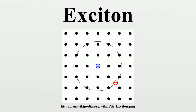Consequently, the exciton has slightly less energy than the unbound electron and hole. The wave function of the bound state is said to be hydrogenic, an exotic atom state akin to that of a hydrogen atom. However, the binding energy is much smaller and the particle size much larger than a hydrogen atom. This is because of both the screening of the Coulomb force by other electrons in the semiconductor and the small effective masses of the excited electron and hole.